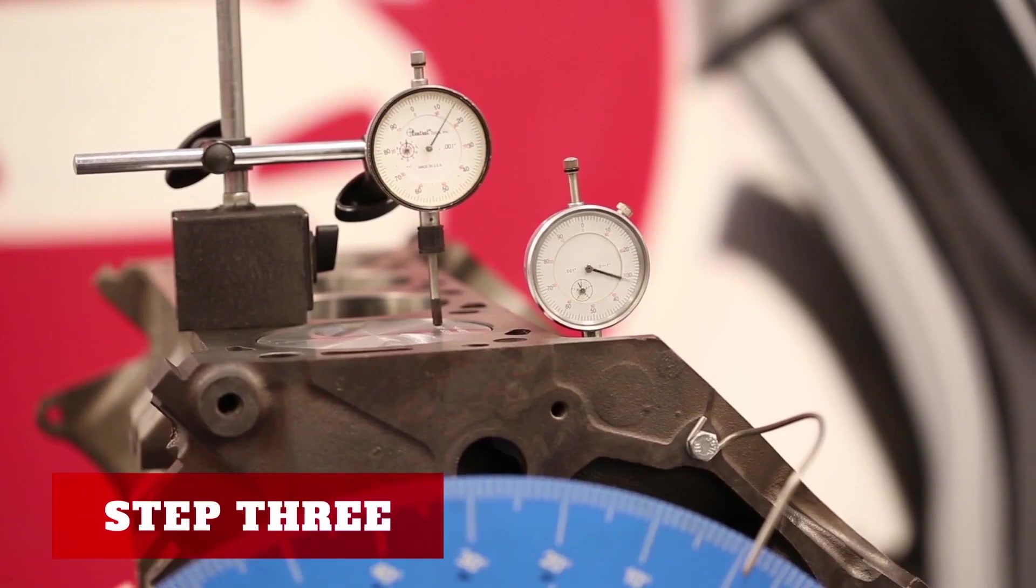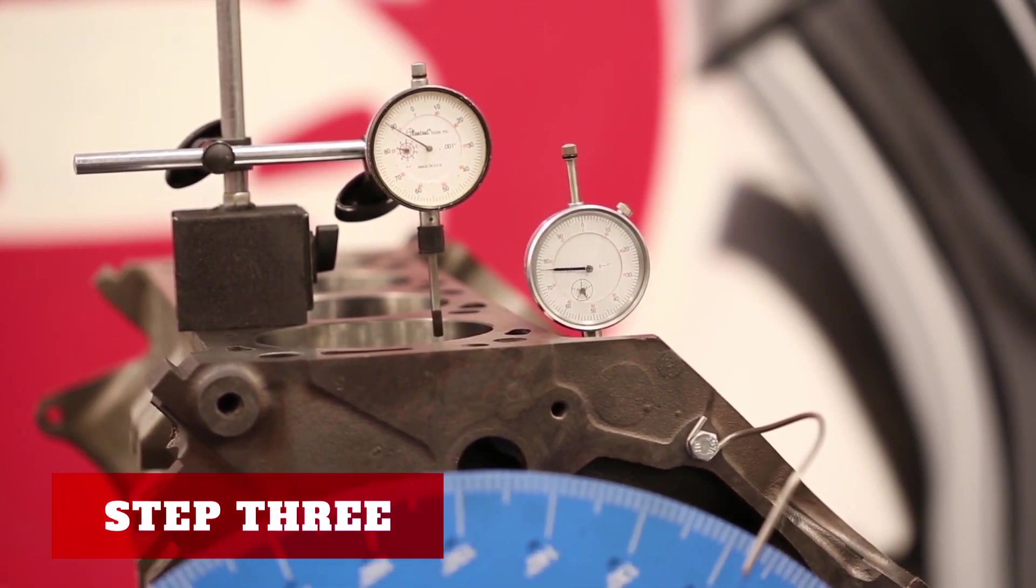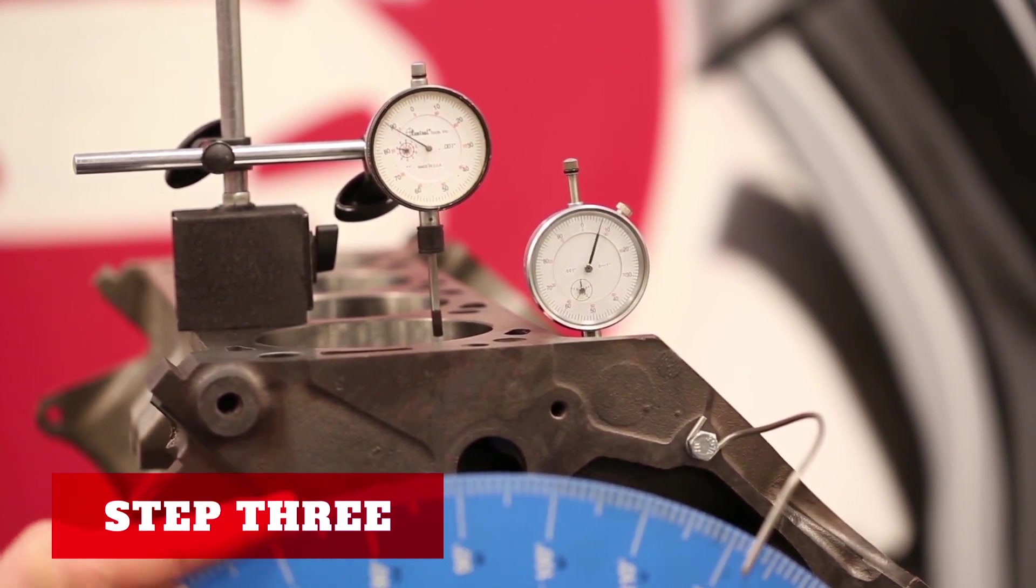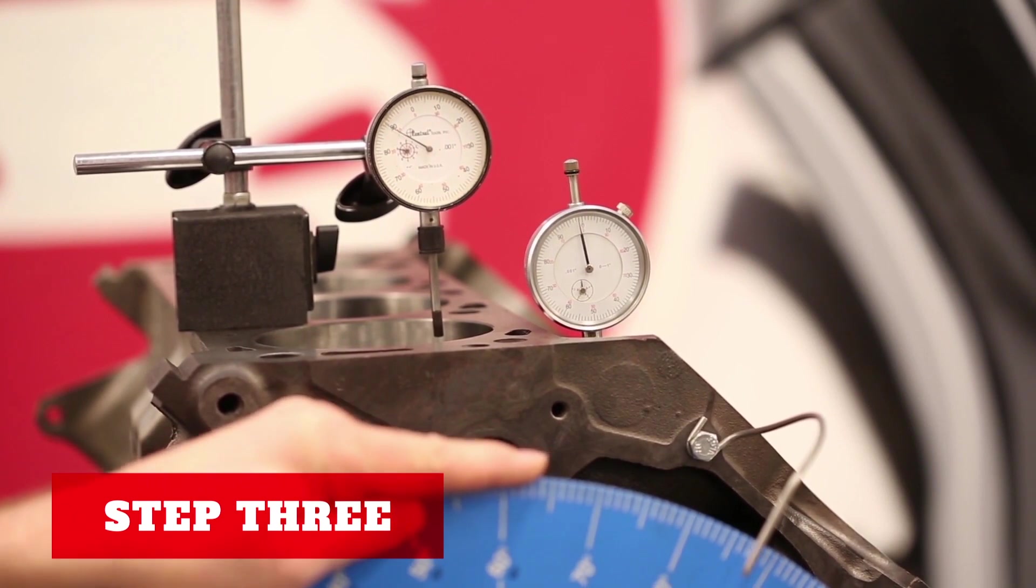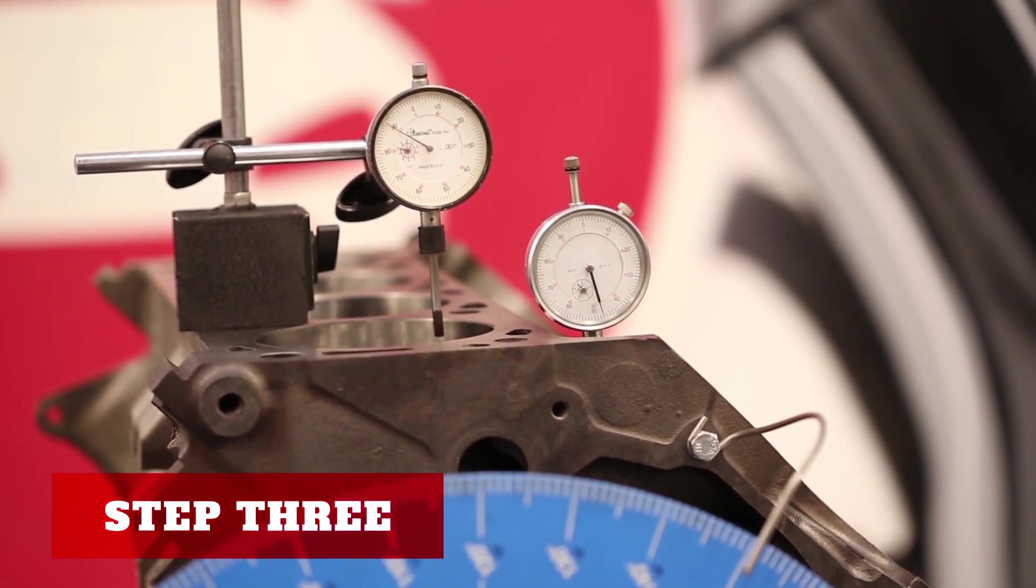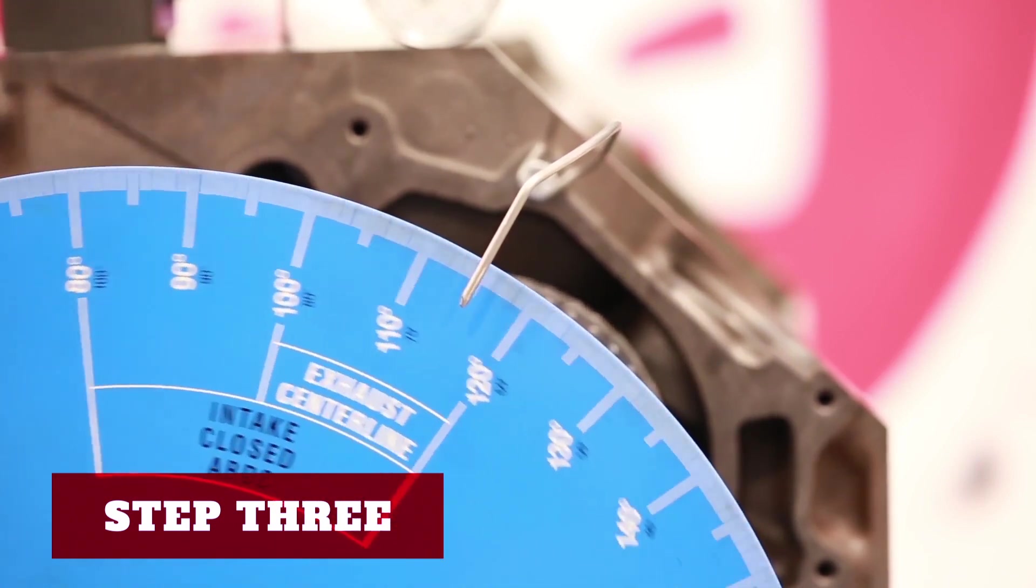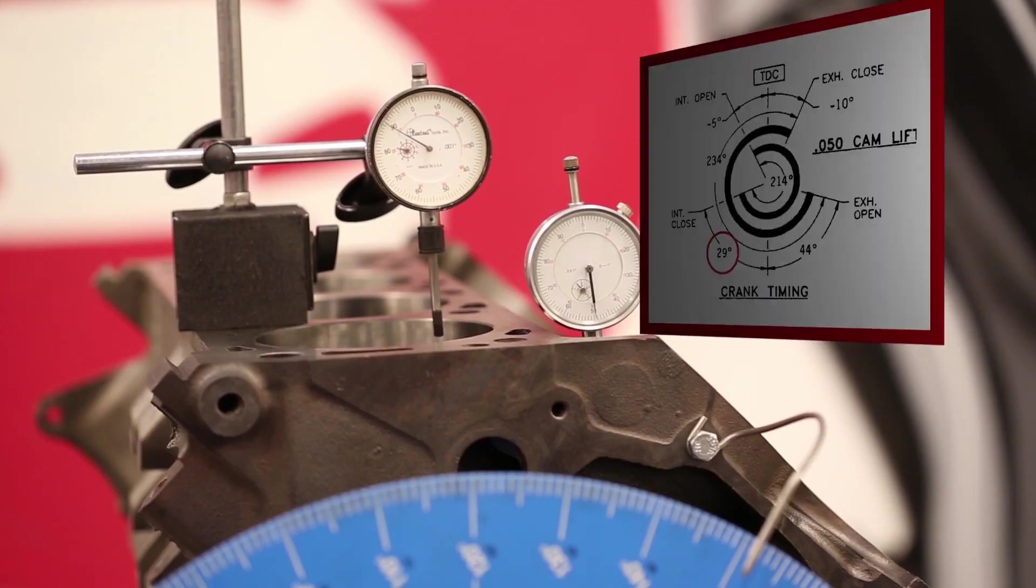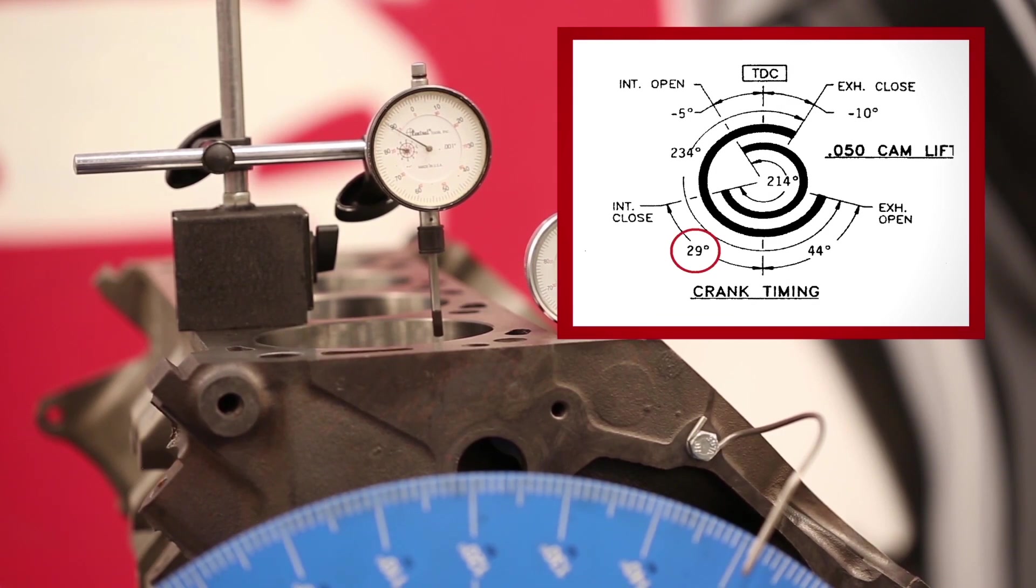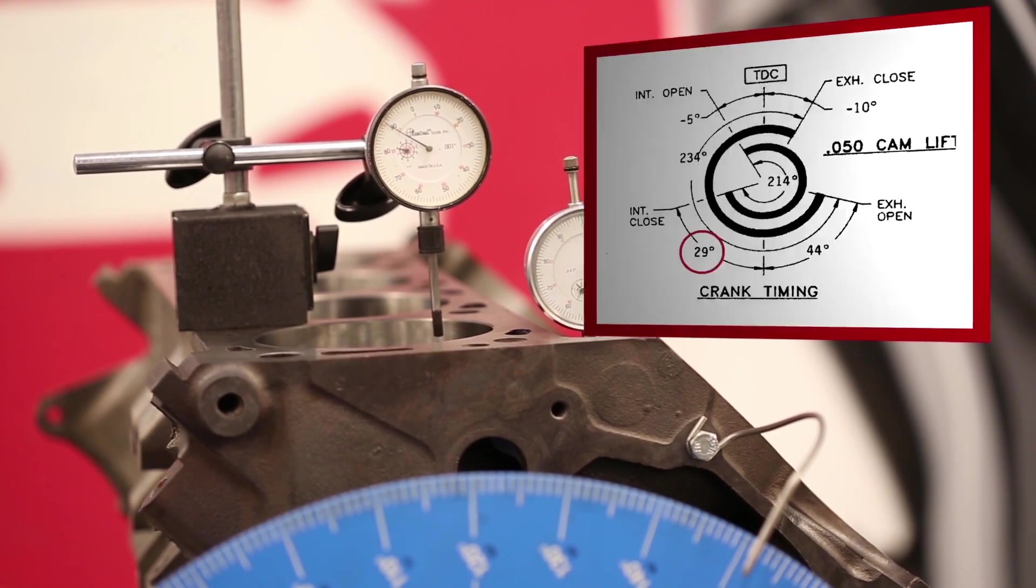Now we're going to look at the intake valve closing event. I'll turn the degree wheel until the indicator stops moving. Then I'll back up the wheel to 50 thousandths and read our number in black after bottom dead center. This is the intake closing event. We're right at about 29 or 30 degrees after bottom dead center. On the spec card it shows the intake closes at 29 degrees after bottom dead center. So we're only one degree off, which is acceptable.